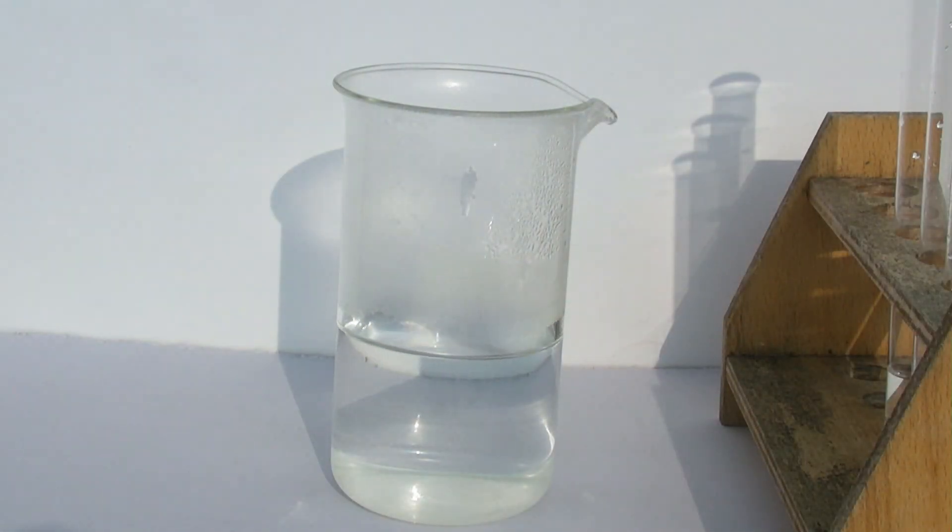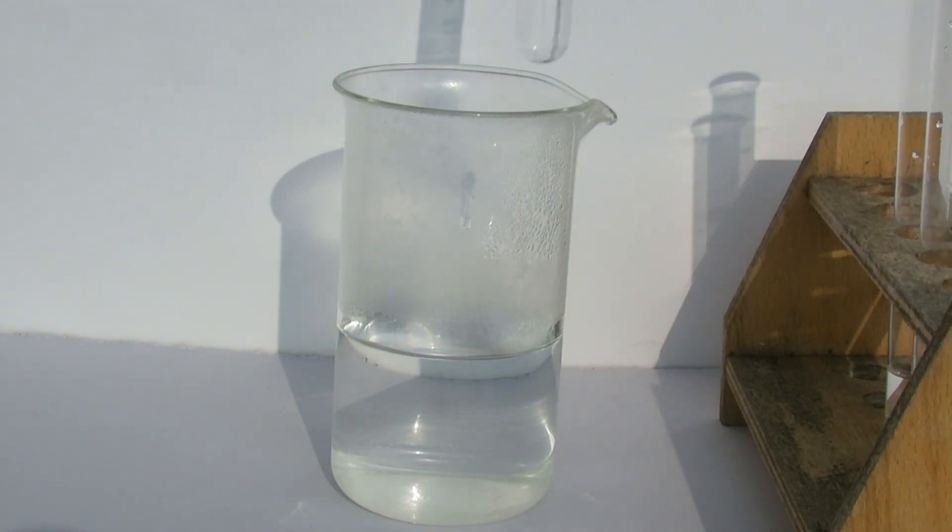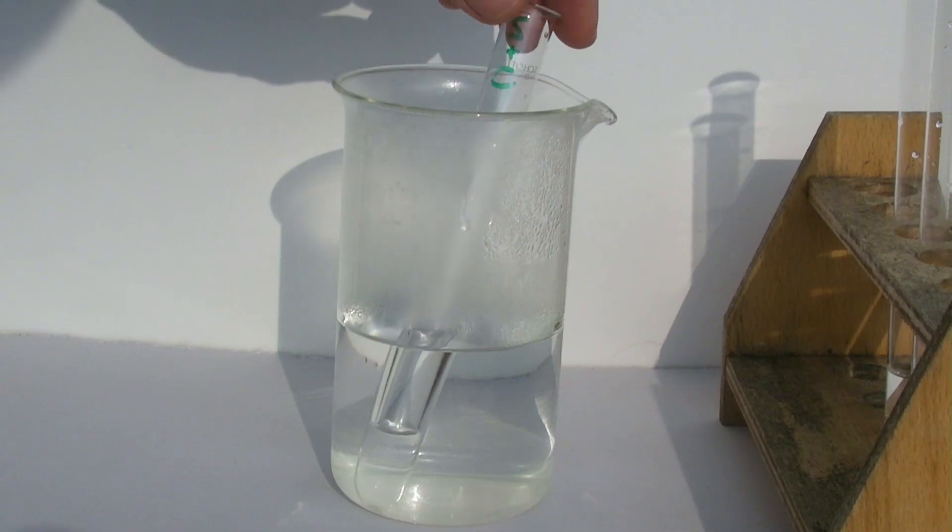Next, a beaker is filled with boiling hot water and the test tube containing the sucrose and citric acid is heated for a minimum of 2 to 3 minutes.